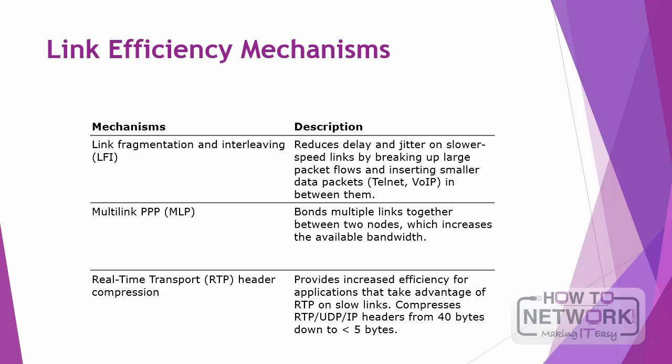Our final topic is link efficiency. Within Cisco IOS, there are several link efficiency mechanisms available: LFI, which is used to reduce delay or jitter on slower speed links; multilink PPP, which bonds multiple links together between two nodes to increase available bandwidth; and RTP real-time transport header compression, which provides increased efficiency for applications that take advantage of RTP on slower links.